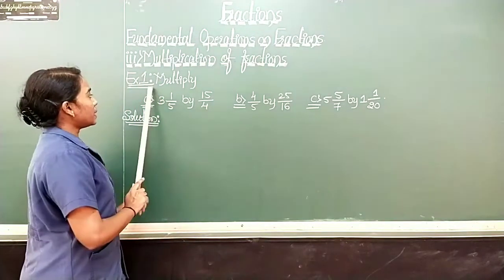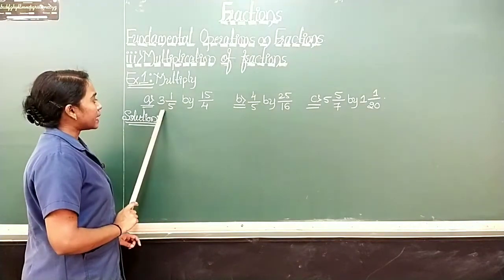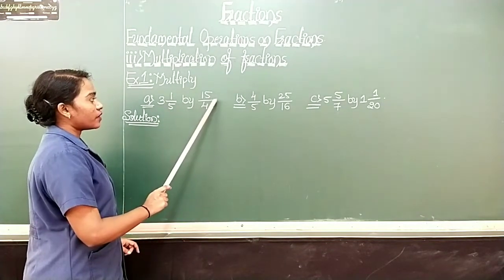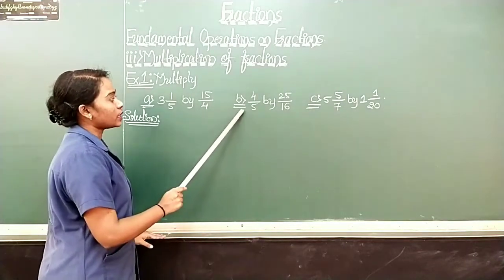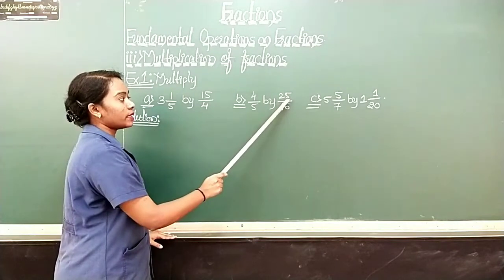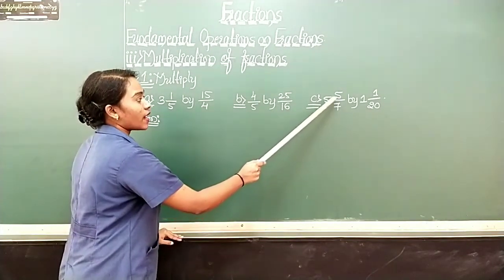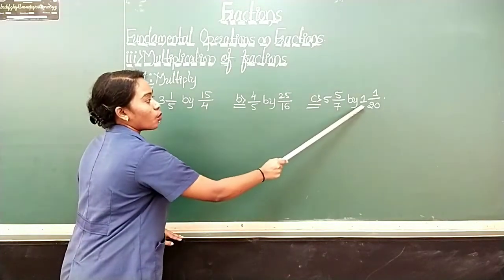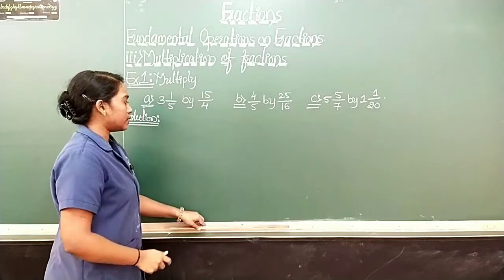See here — multiply. The first one is 3 1/5 by 15/4. The second one is 4/5 by 25/16. And the third one is 5 5/7 by 1 1/20.